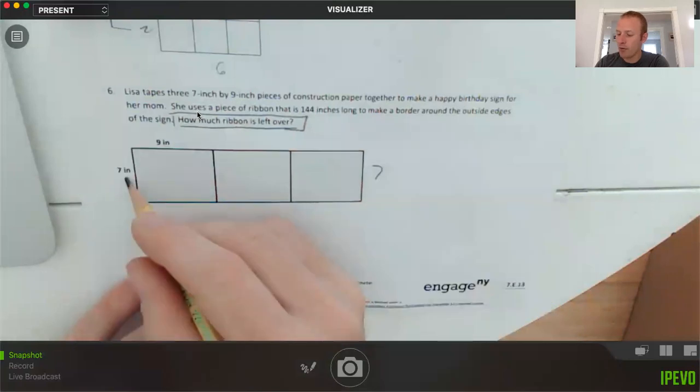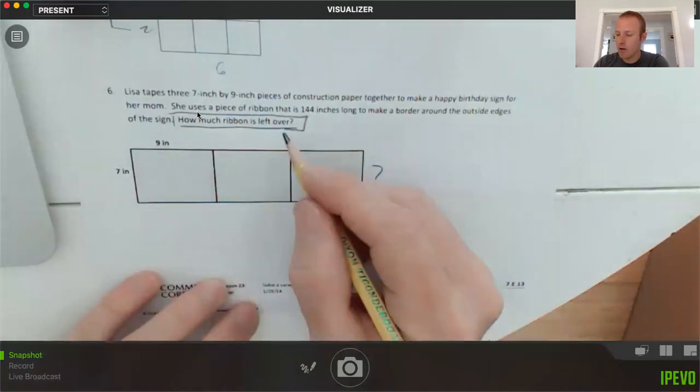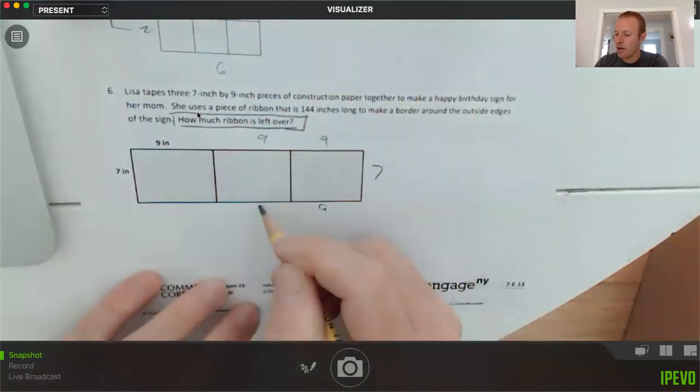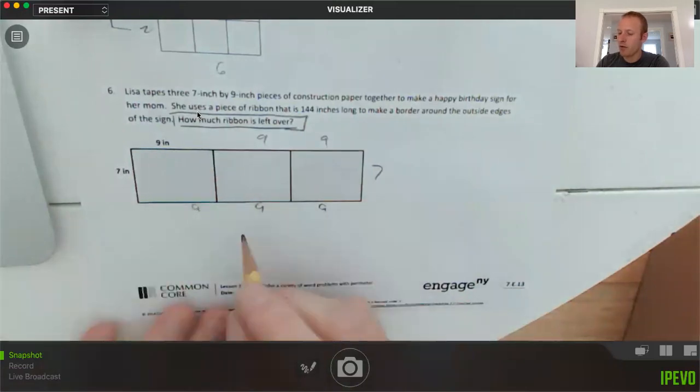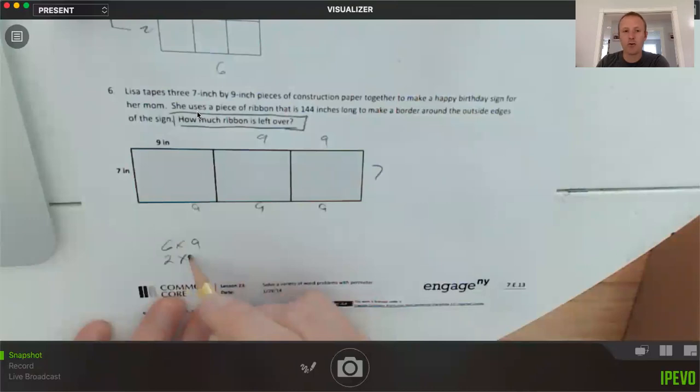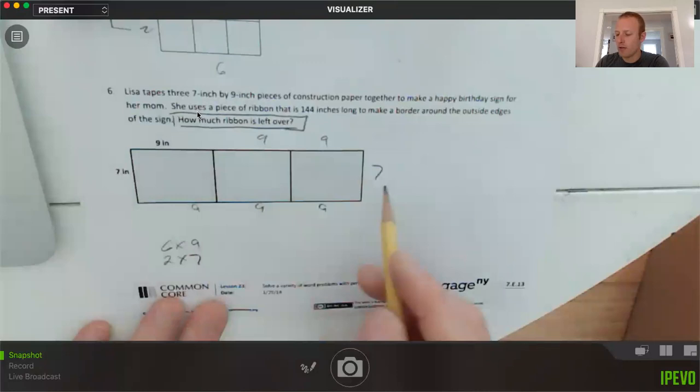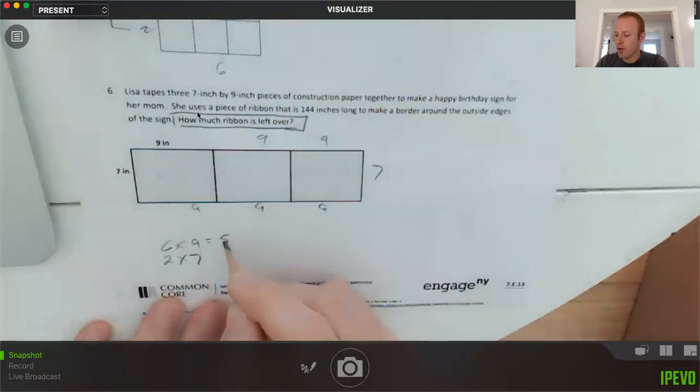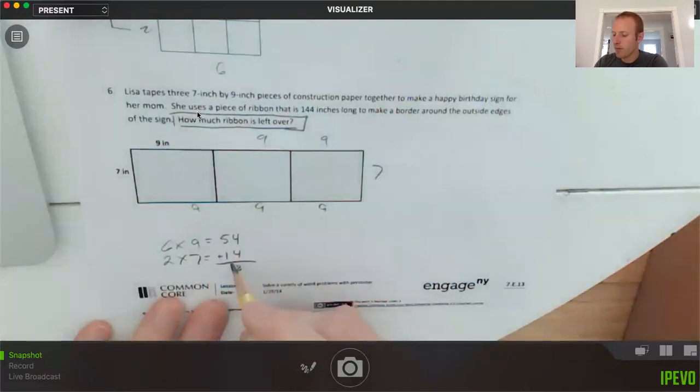So let's go: seven, seven—opposite sides of a rectangle are the same. Nine, nine, nine, nine, nine. So I have six times nine and I have two times seven. I'm getting those from six nines and two sevens. Six times nine is 54 and two times seven is 14. I can now add those together and get 68. So the perimeter equals 68.